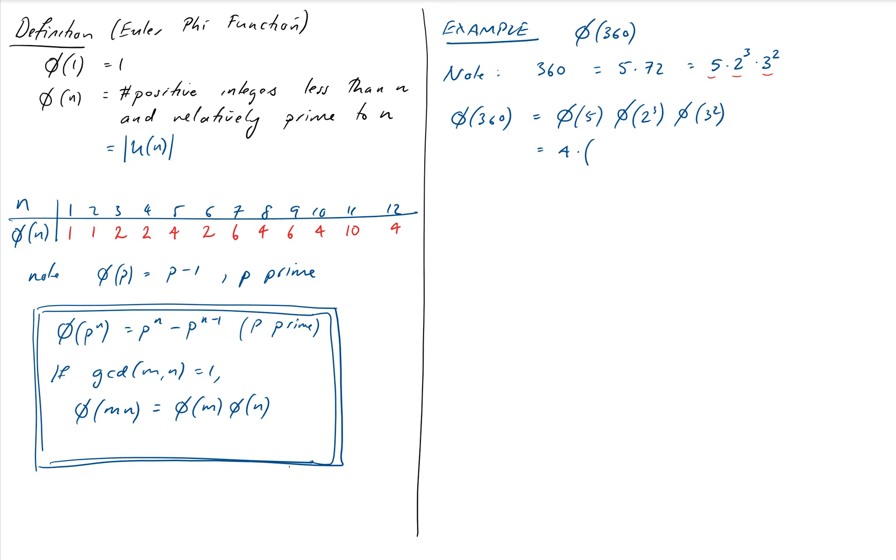So that equals 4 times, 2 cubed. Now 2 is prime. We're cubing it. So p to the n will give us 2 cubed minus 2 squared. And that will be all times, 3 squared. Now p is 3 and n is 2, so I'll have 3 squared minus 3 to the power of 1. That equals 4 times 8 minus 4 is 4 times 9 minus 3 is 6, which is 6 sixteens, which gives us 96.